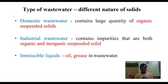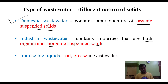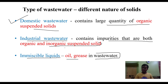Domestic wastewater contains a large quantity of organic suspended solids, whereas industrial wastewater contains impurities that are both organic and inorganic suspended solids. Immiscible liquids such as oil and grease are also present in wastewater.